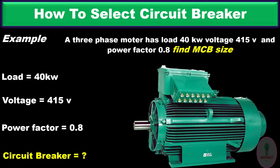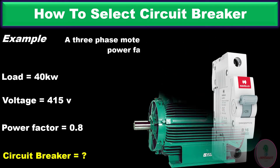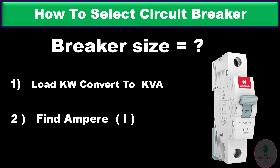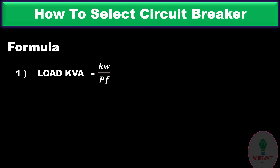To find the circuit breaker or MCB, we are going to do two steps. Number one: convert load in kilowatt to kVA. Number two: find the ampere of the motor.